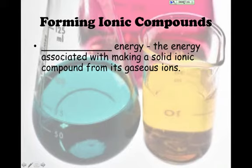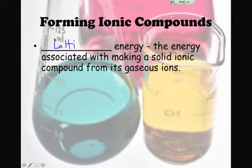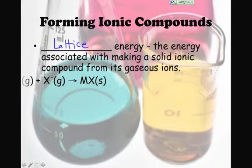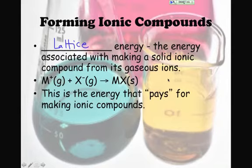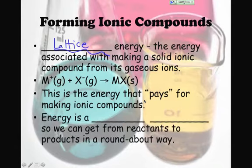In forming ionic compounds, we have to take into consideration the amount of energy that is associated with creating solid ionic compounds, or crystals, from its gaseous ions. We call this the lattice energy. And we calculate it by an indirect route. We can't really measure a metal gas plus a non-metal gas ions making a compound. We have to sort of go about it in a roundabout sort of way. The energy though that's released, the lattice energy, is the energy that is paying for the cost of making ionic compounds.